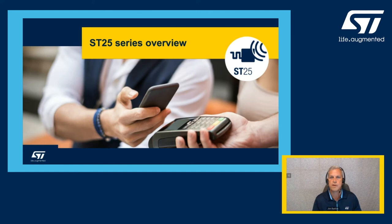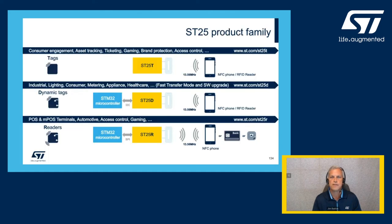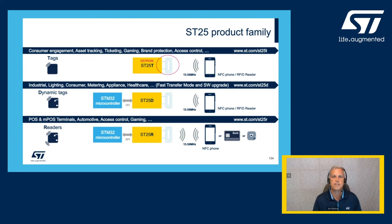Now let's look at the product families available for these use cases. At the top of this slide are the NFC tags — simple but featuring authentication gates and onboard EEPROM, which is a key difference from QR codes: you can read and write to this EEPROM hundreds of thousands of times. The dynamic tags in the center have the RF interface and onboard EEPROM, plus a dual port — typically an I²C port or PWM port — to interface with a microcontroller.